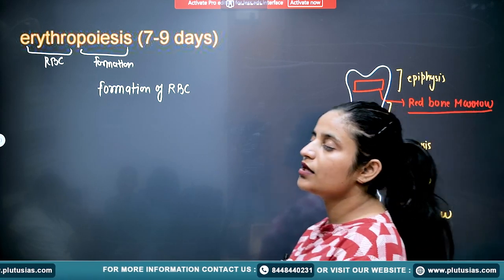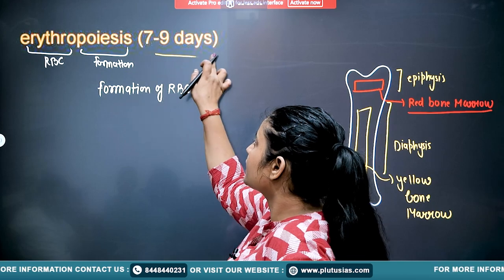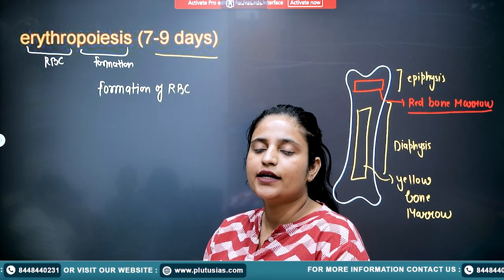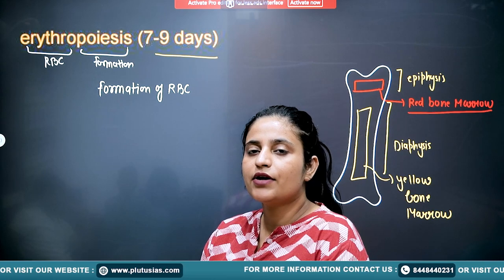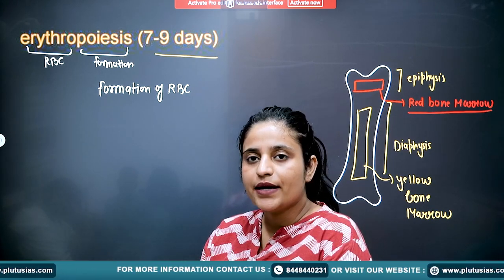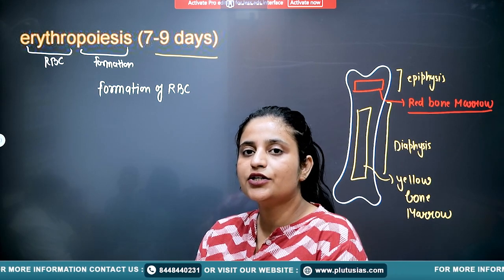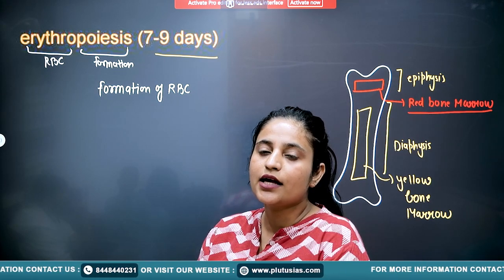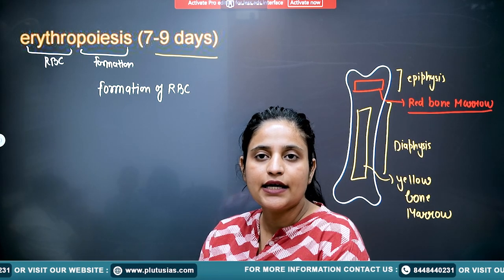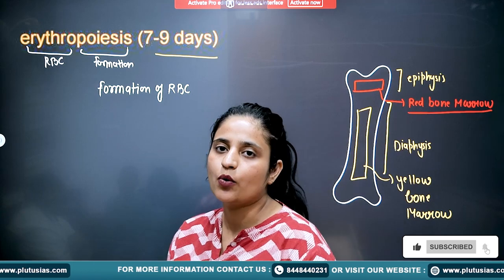This process of erythropoiesis completes in 7 to 9 days. When you are an adult, this process takes place in the red bone marrow. But during embryonic development — in intrauterine life — this process takes place first in the yolk sac, then liver, then spleen, and finally in the red bone marrow.